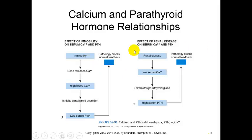Now let's look at the effects of renal disease. Renal disease is going to result in low calcium blood levels. The calcium is going to be spilled in the urine, which is going to stimulate the parathyroid gland. Low calcium levels are going to cause high serum parathyroid hormone secretion.